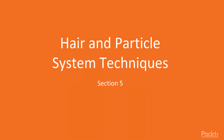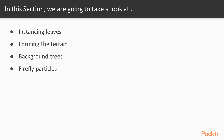Hi, and welcome back to Section 5, Hair and Particle System Techniques. In this section, we will be going over how to use the particle system within Blender to populate our scene. In the last section, we went over how to add lights to our scenes using the different lamps available. During this section, we will be going over instancing leaves and trees using a particle hair system, forming the terrain of our background scene, and adding firefly particles to make our scene look more interesting.